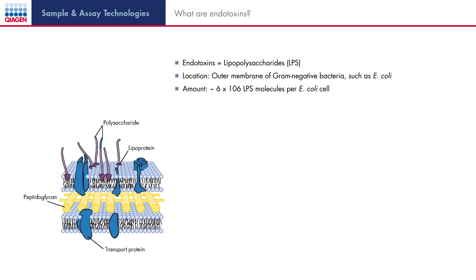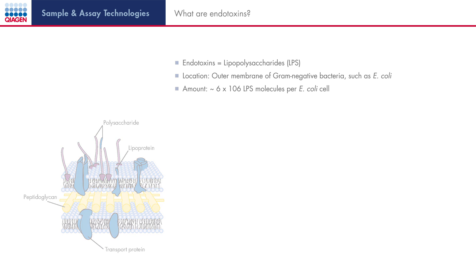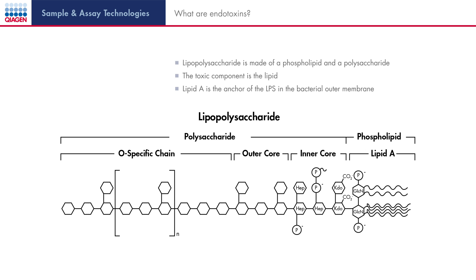What are endotoxins, where are they located, and why do they have a toxic effect? Endotoxins are lipopolysaccharides, also known as LPS, and are located in the outer membrane of gram-negative bacteria. In humans, they stimulate an immunogenic response to a bacterial infection. Endotoxins are made of a highly conserved lipid part and a polysaccharide, as shown in the figure. The phospholipid on the right-hand side is the part responsible for the toxic effect, while the polysaccharide on the left-hand side has structural functions.